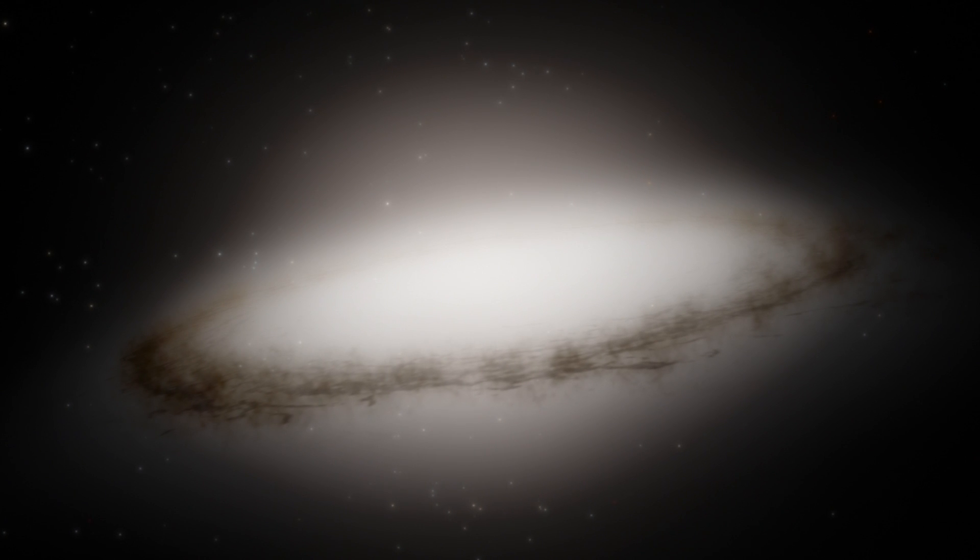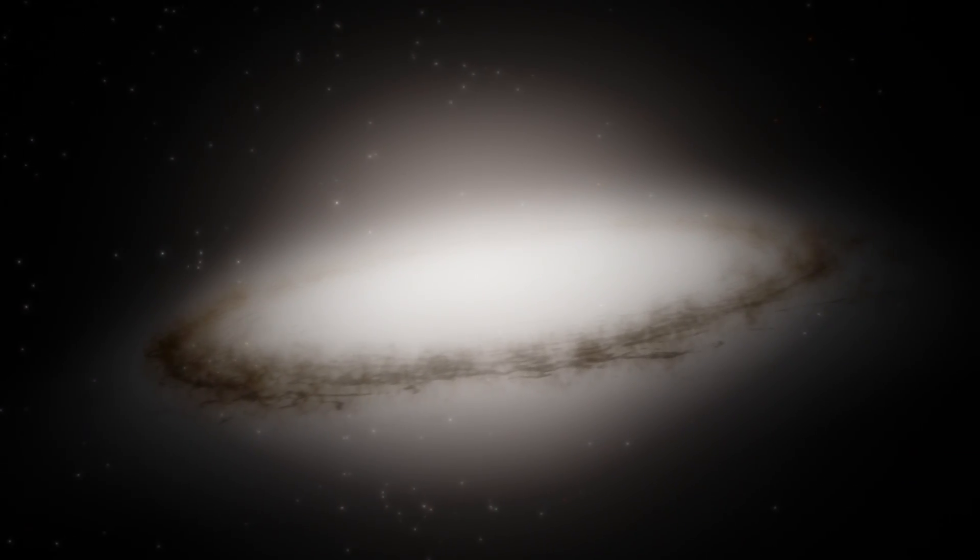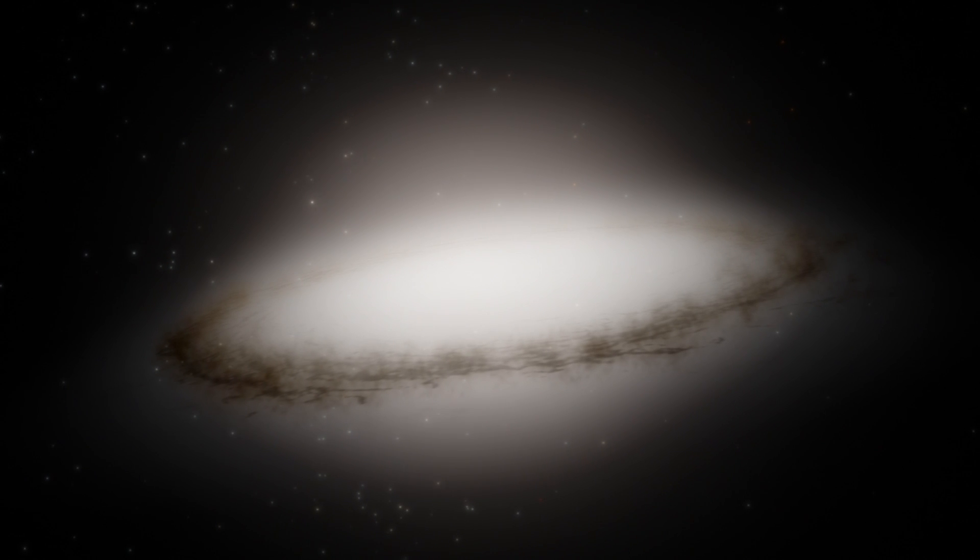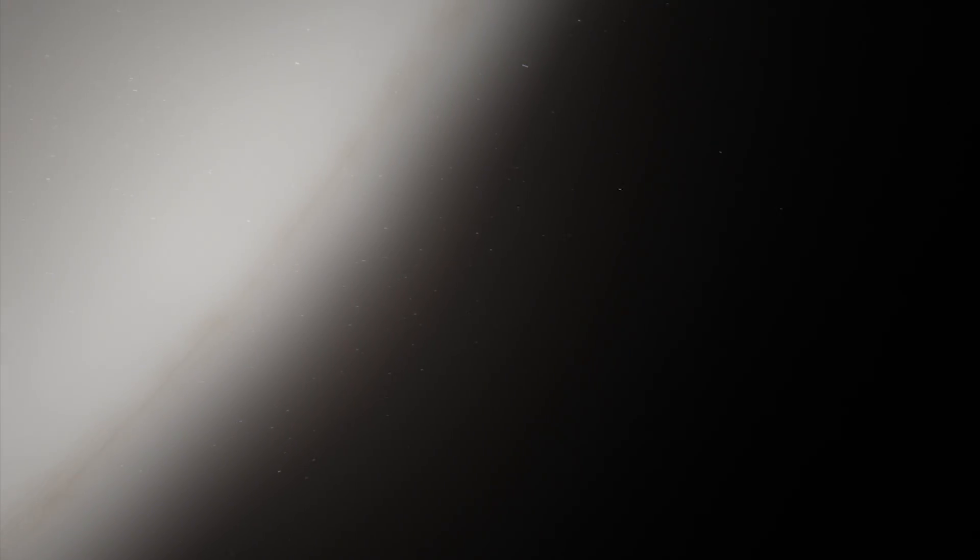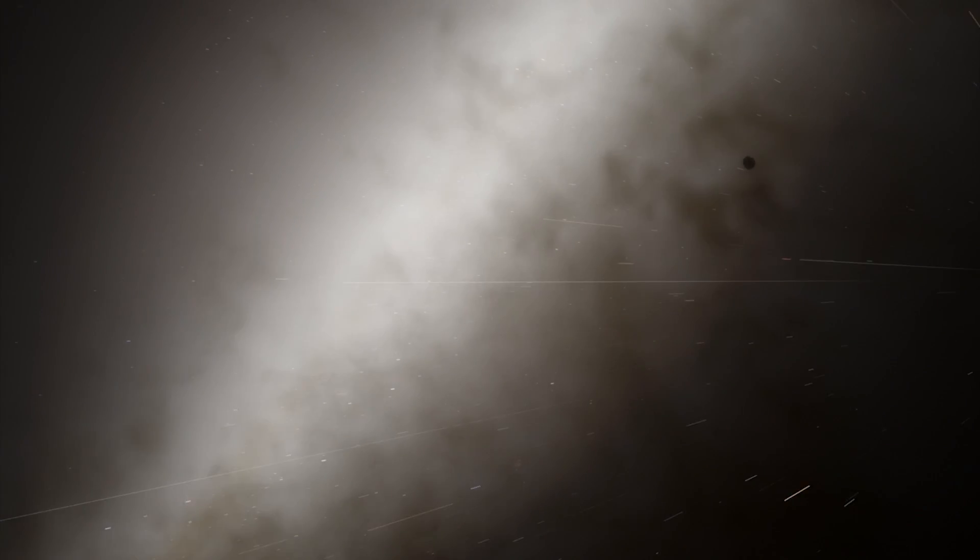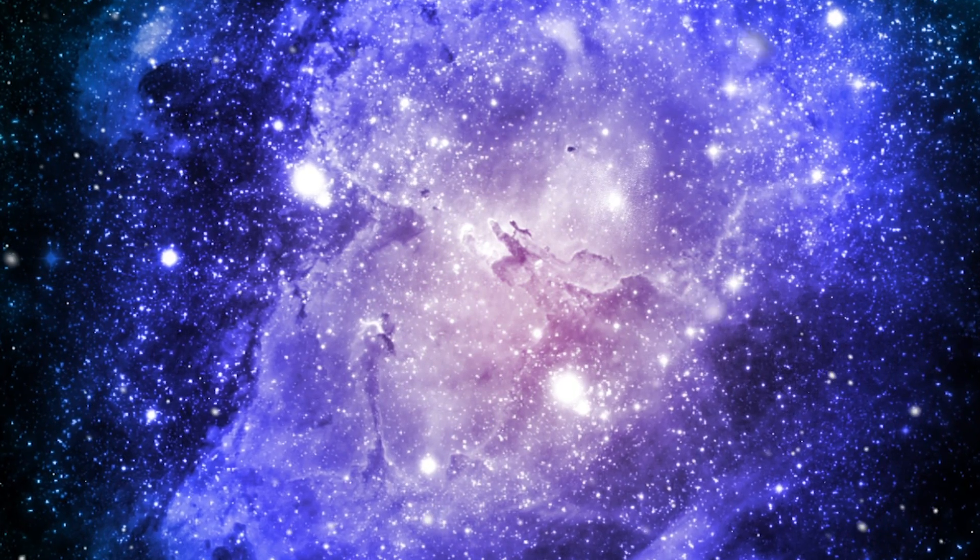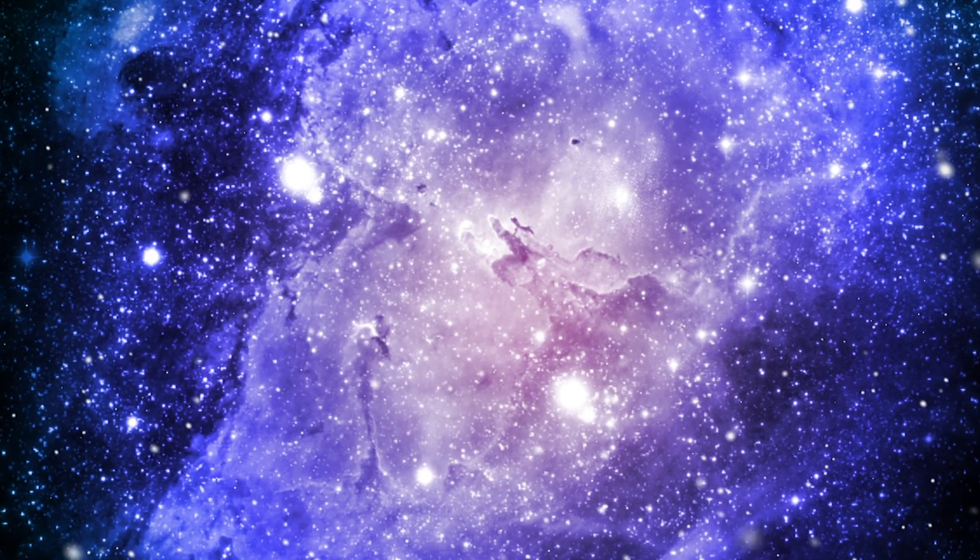The Milky Way's dark halo is about 20 times more massive than all visible matter in the galaxy. A dark halo is the inferred halo of invisible material which is the dark matter that envelops the galactic disk as well as groups of clusters of galaxies. Dark matter is what holds everything together.